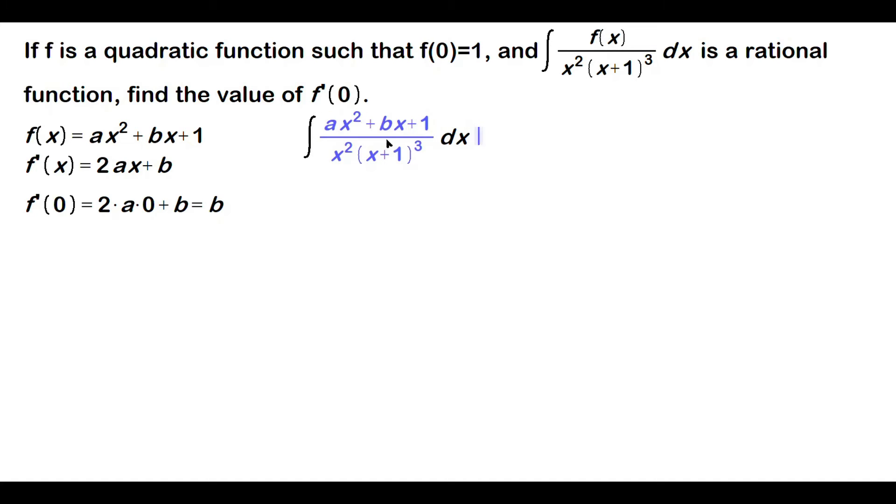Now, we are told this is a rational function once the antiderivative is taken. So let's do some partial fractions. Given the nature of this integrand with the x squared multiplying x plus 1 cubed, I'm going to have ax squared plus bx plus 1, and this is over x squared times x plus 1 quantity cubed.